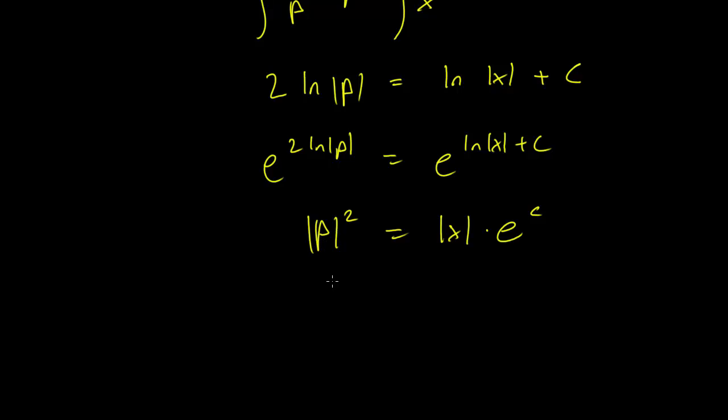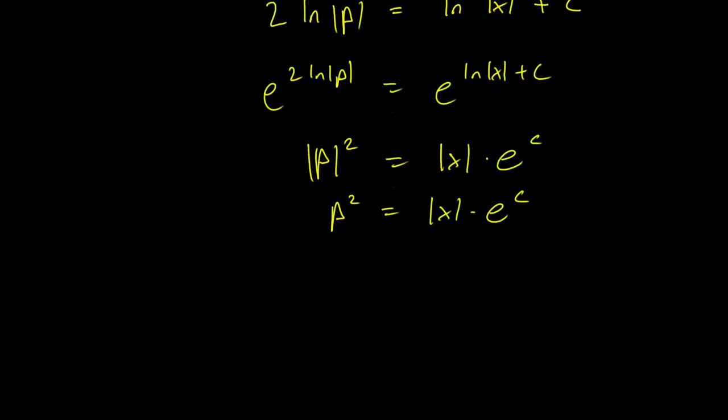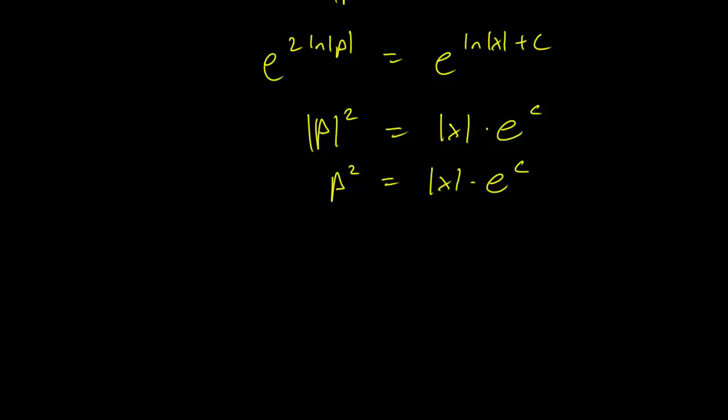Since we're taking the square, you can just get rid of the absolute value. So p squared equals x times e to the c. And let's make it a bit easier to write: k equals e to the c. So changing our differential equation to p squared equals k times x.